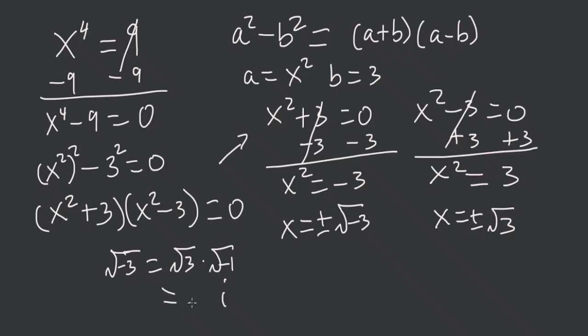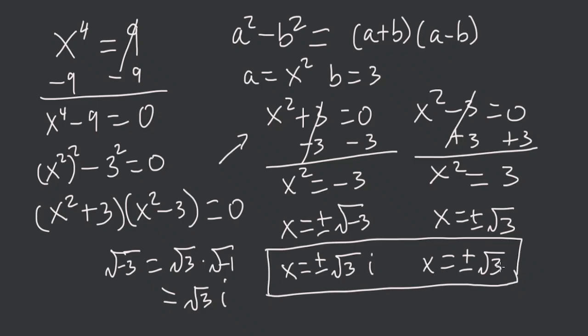So this is equal to square root of 3i. So the solutions here are x is equal to plus or minus square root of 3i, and x is equal to plus or minus square root of 3. These are the solutions. These are the real solutions and these are the imaginary solutions. Thank you for listening. Please like and subscribe.